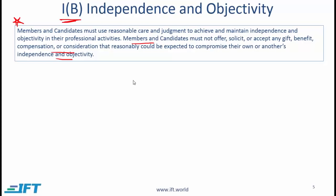Before going further, let's understand the importance of this standard. Say you write research reports on a few companies and there is a perception that you receive expensive gifts from these companies and then write very favorable reports. There is the perception that your independence and objectivity is compromised because of the gifts that you receive. Does that hurt your professional integrity? Obviously it does. People who believe that you are receiving gifts and then writing good reports are not likely to trust your reports. Not only does this hurt your professional integrity, it also hurts the integrity of your firm and it also impacts the industry that you operate in.